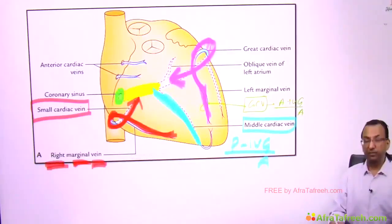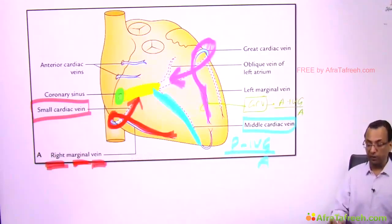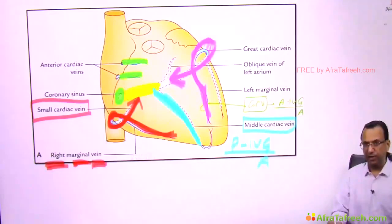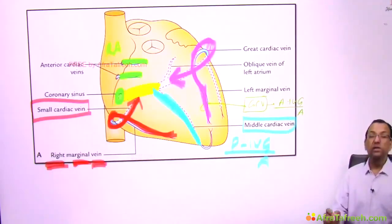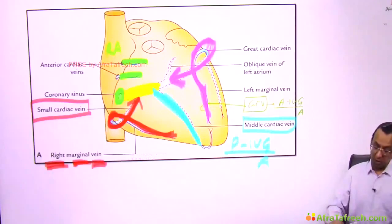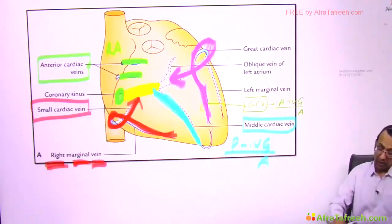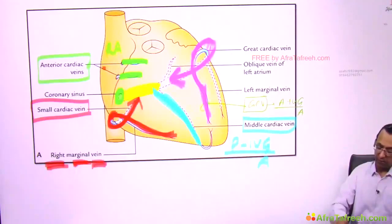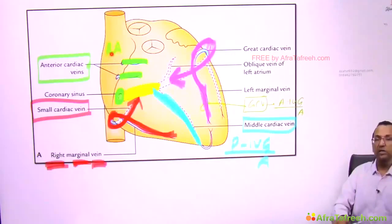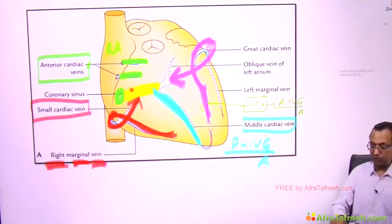There are also anterior cardiac veins, which do not drain into the coronary sinus. Instead, they drain directly into the anterior wall of the right atrium. This is an important distinction — anterior cardiac veins bypass the coronary sinus entirely.